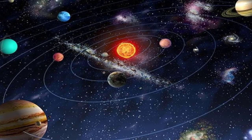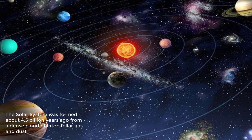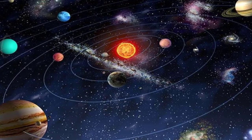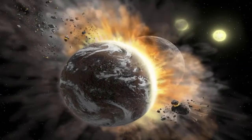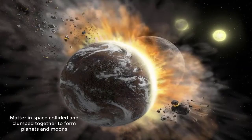The solar system was formed about 4.5 billion years ago from a dense cloud of interstellar gas and dust. With the sun and its enormous gravity at the center of a system of dust and gases, matter further out collided and clumped together to form planets and moons.